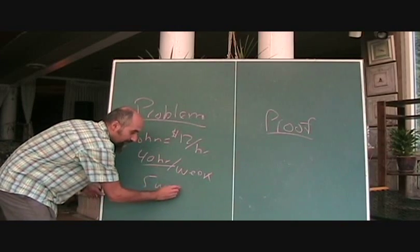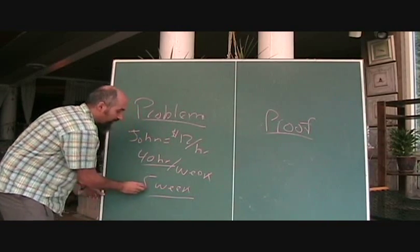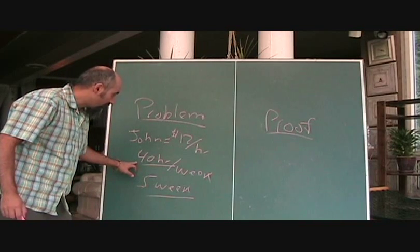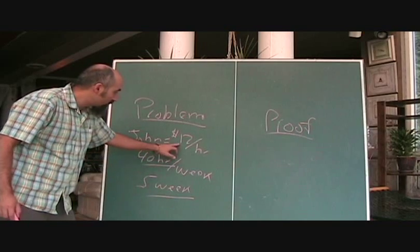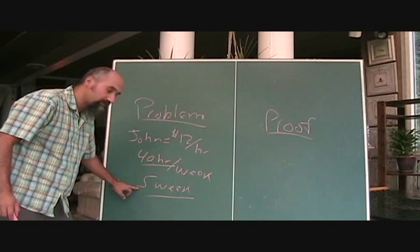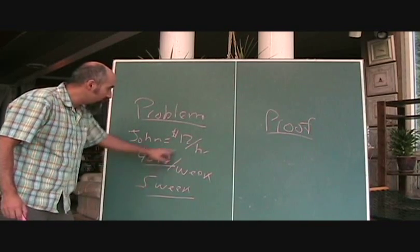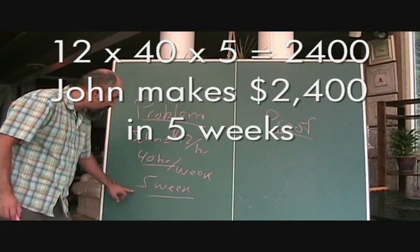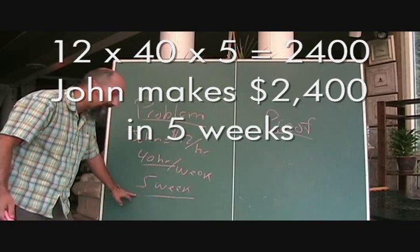Okay. Now this is just a straightforward problem. What you would do is: he works 40 hours per week, he gets paid $12 an hour, and he works for 5 weeks. So all you would do is 12 times 40—that tells you how much he's going to make in a week—and then multiply that by 5, and that gives you how much money he's going to be making in 5 weeks.